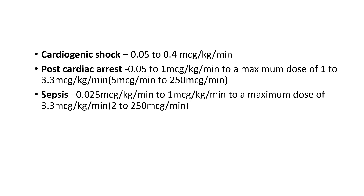The uses of noradrenaline: it is used in cardiogenic shock where the dose is 0.05 to 0.4 microgram per kg per minute. Then it is used in post-cardiac arrest where the dose is 0.05 to 1 microgram per kg per minute, up to a maximum of 1 to 3.3 microgram per kg per minute. It is also used in septic shock, where noradrenaline is the first drug of choice, at a dose of 0.025 to 1 microgram per kg per minute, to a maximum of 3.3 microgram per kg per minute.